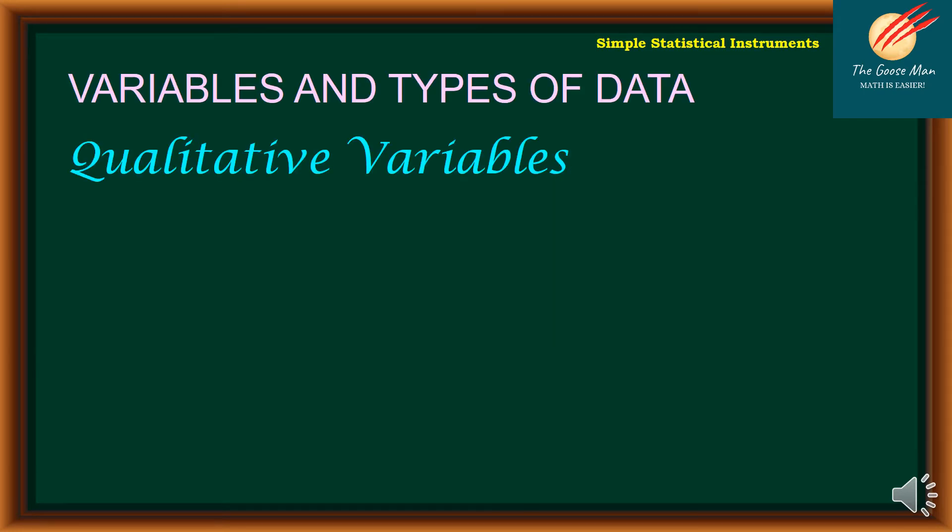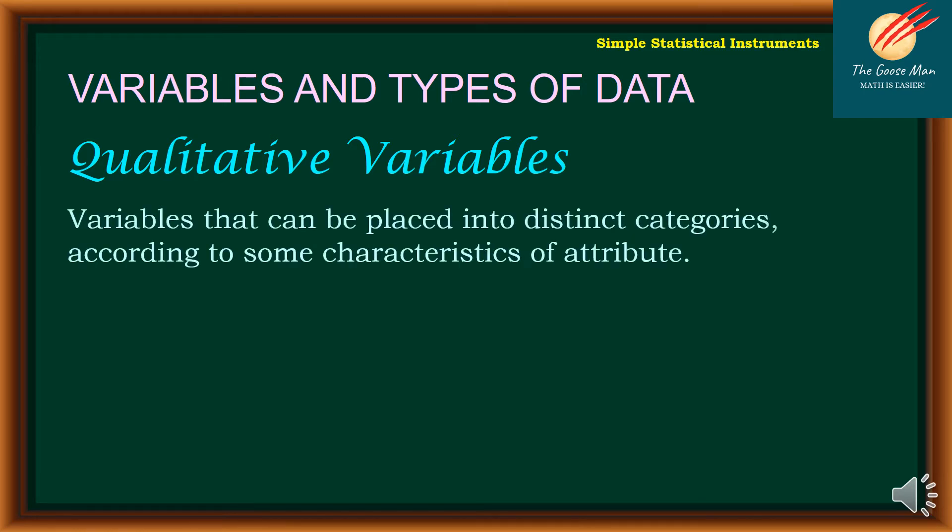To explain more on the type of data, let's talk about the variables and types of data. Qualitative variables or qualitative data can be placed into distinct categories according to some characteristics of attribute. For our example, we have your favorite color. For instance, my favorite color is green while yours is green and so on and so forth. Another one is ethnicity. We can have the Caucasian, Filipinos, and other.